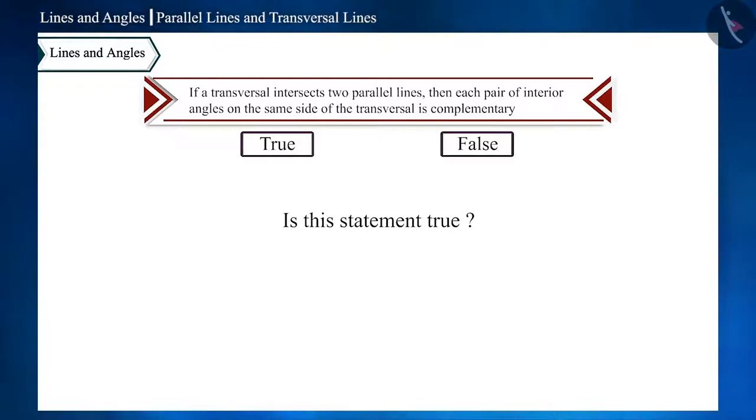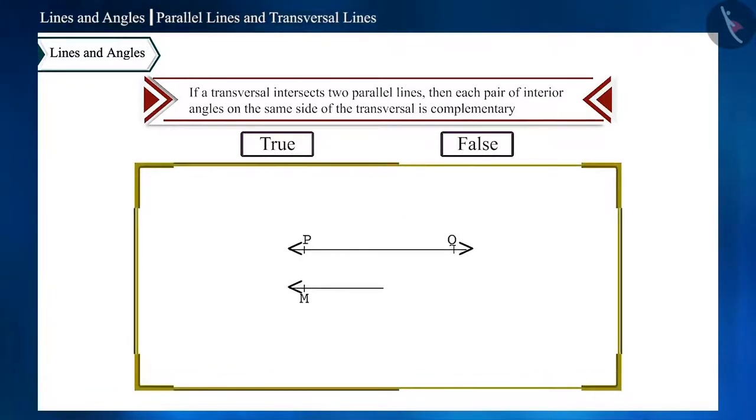Let's understand this statement with the help of a figure. PQ and MN are two parallel lines and the transversal AB intersects these two lines at points C and D respectively.